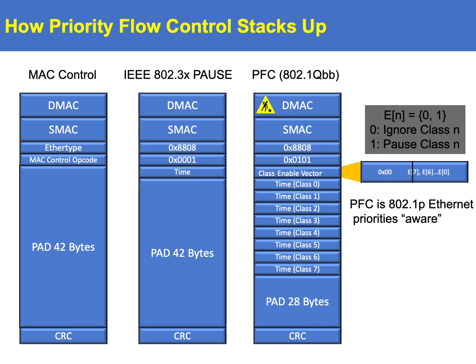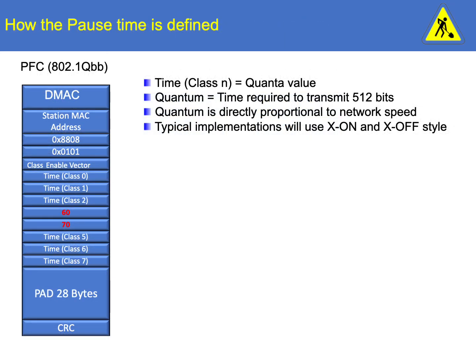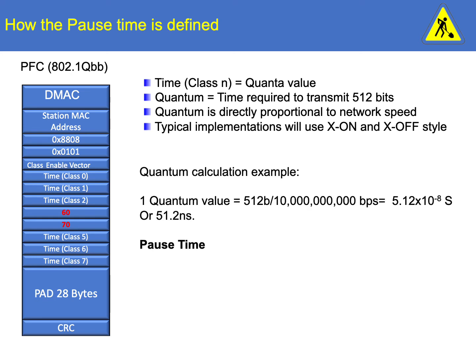Now let's take a closer look at how priority flow control is implemented. Firstly, we need to understand that the pause value is not a direct unit of time but rather a number of bits measured in quanta. In PFC, a value of one quanta is equal to 512 bits. This value would therefore indicate to the far end that transmission should pause for 512 bits. The amount of time will vary depending on the transmit clock — the faster the transmission rate, the shorter the pause. For example, if we have a quanta value of 1 and we're transmitting at 10 Gbps, the pause time for 512 bits will effectively be 51.2 nanoseconds.